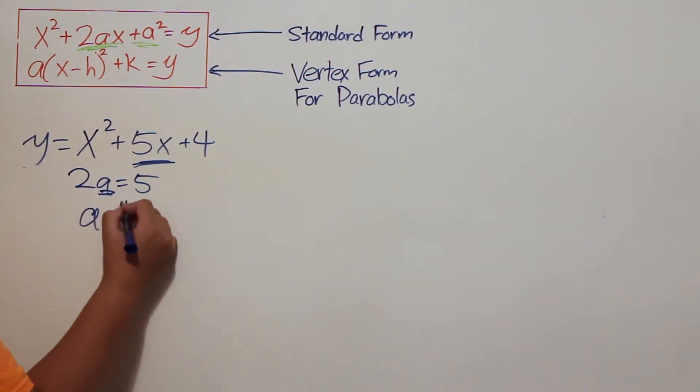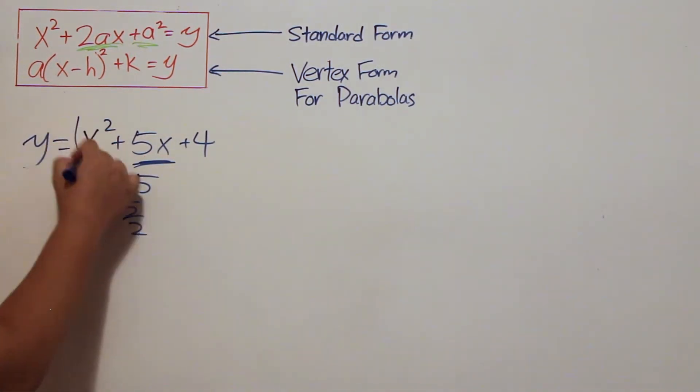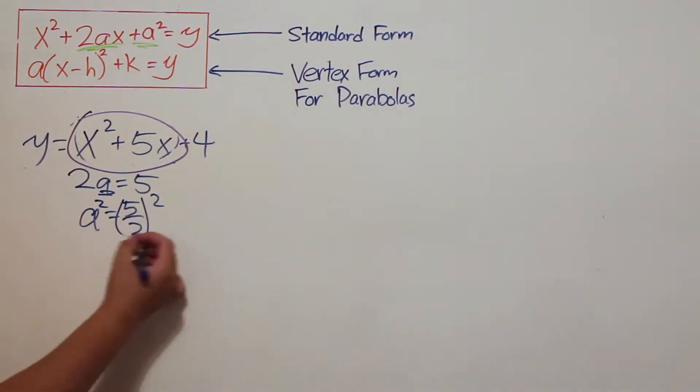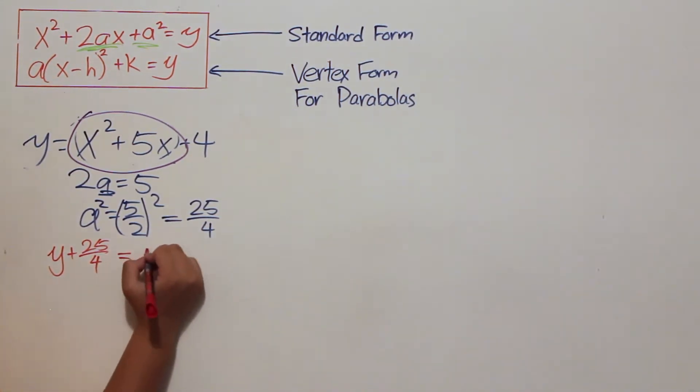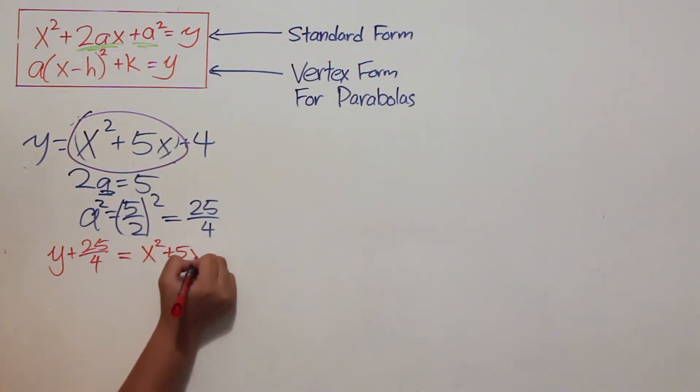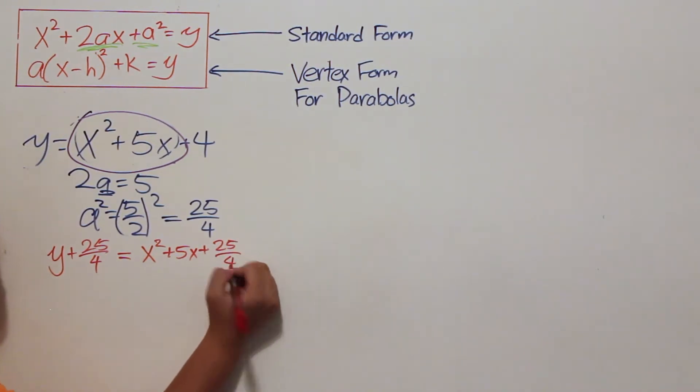And isolating a, we get a equals 5 halves and a squared equaling 25 over 4. So, first things first, we take our a squared value of 25 over 4 and add it to both sides and get y plus 25 over 4 equals x squared plus 5x plus 25 over 4 plus 4.